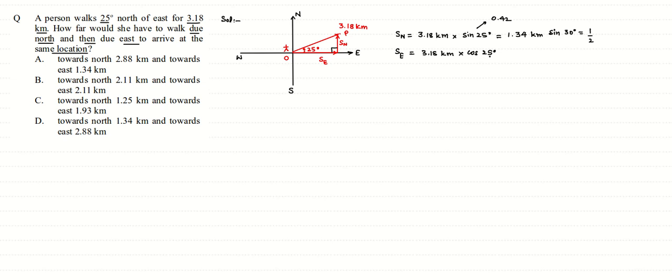So if you multiply this with 3.18 we get this value. So along north the value is approximately 1.34, towards north it is 1.34 kilometers given in option D. And towards east, the value of cosine 25 is approximately 0.9, so if you multiply 3.18 into 0.9 we get approximately 2.88 kilometers. So the value towards east is 2.88 kilometers. The correct answer is option D here.